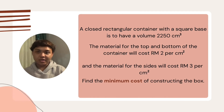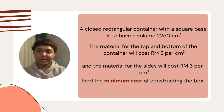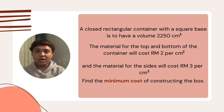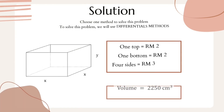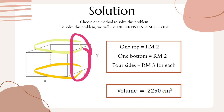A closed rectangular container with a square base is to have a volume of 2250 cubic centimeters. The material for the top and bottom will cost RM2 per square centimeter, and the material for the sides will cost RM3 per square centimeter. Find the minimum cost of constructing the box. The fixed prices are RM2 for the top, RM2 for the bottom, and RM3 for the side surfaces, and the volume is 2250 cubic centimeters.